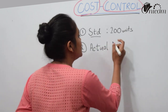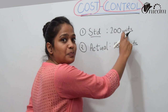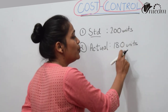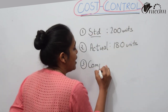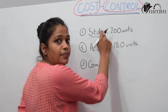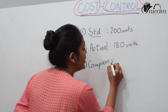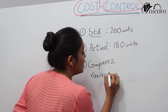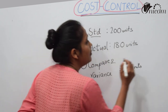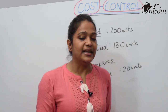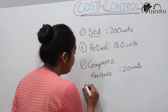After the month, you will see the actual performance. You will determine how many units were made. For example, you have made 180 units, whereas your standard was 200 units. Now, in the controlling procedure, you compare your actual performance. The difference is called variance or deviation — in this case, 20 units less than the standard.